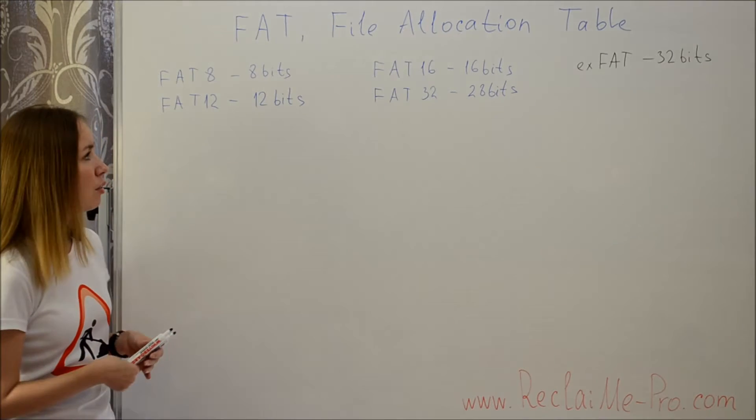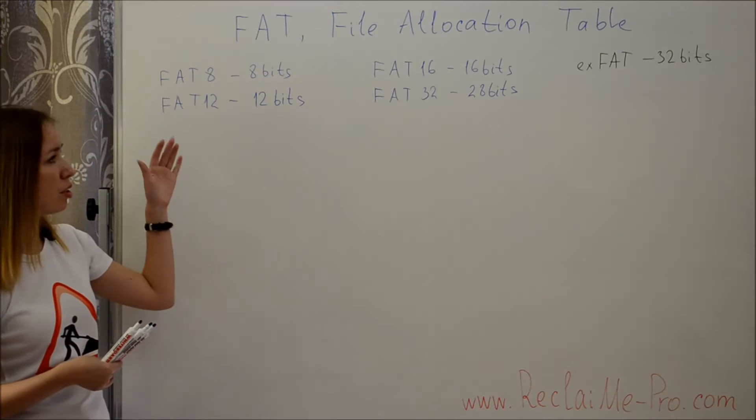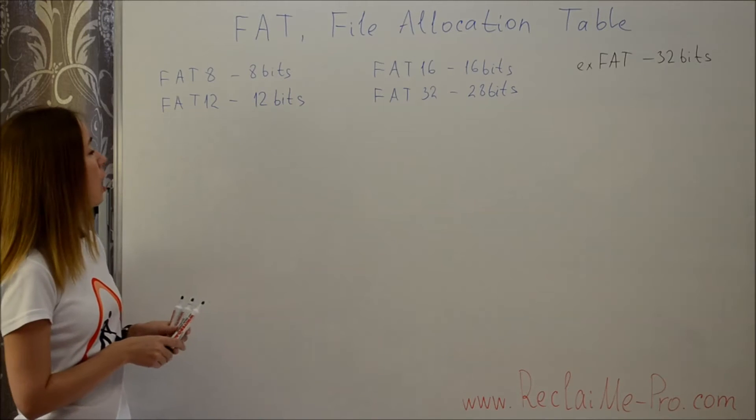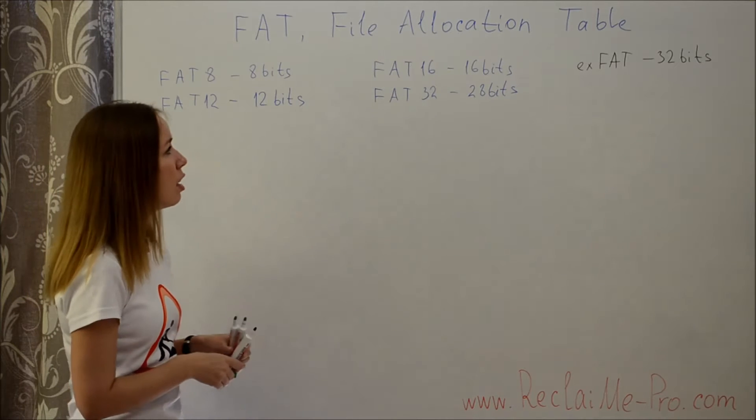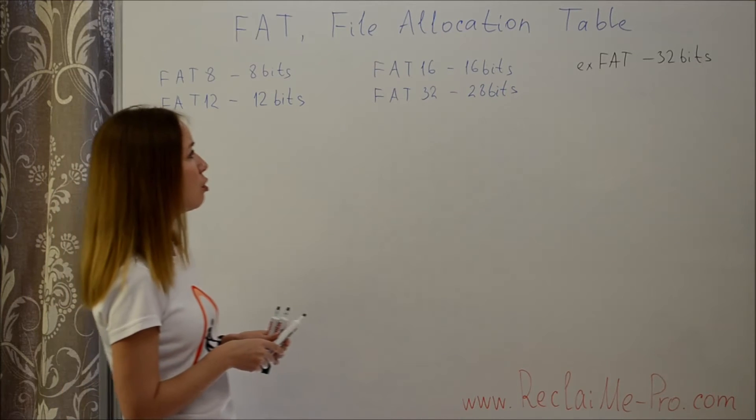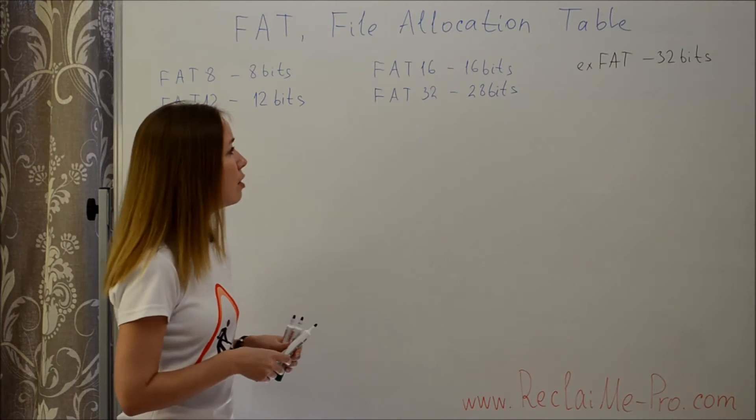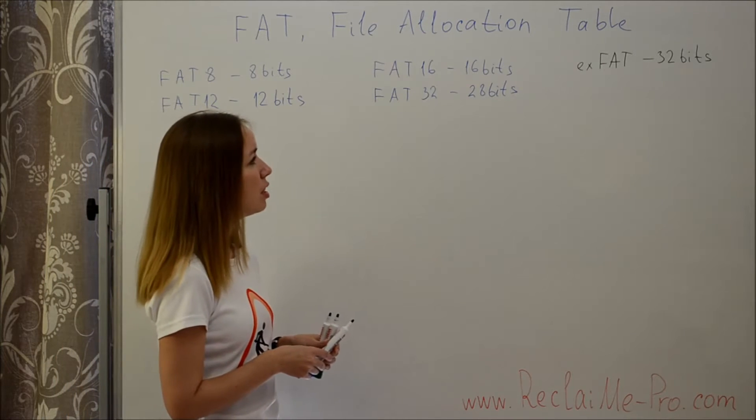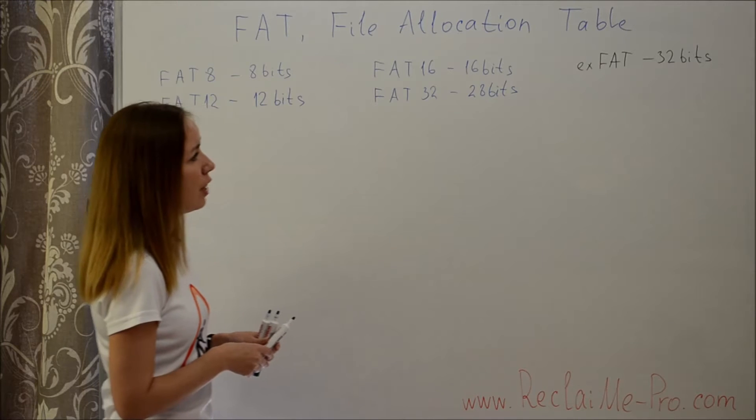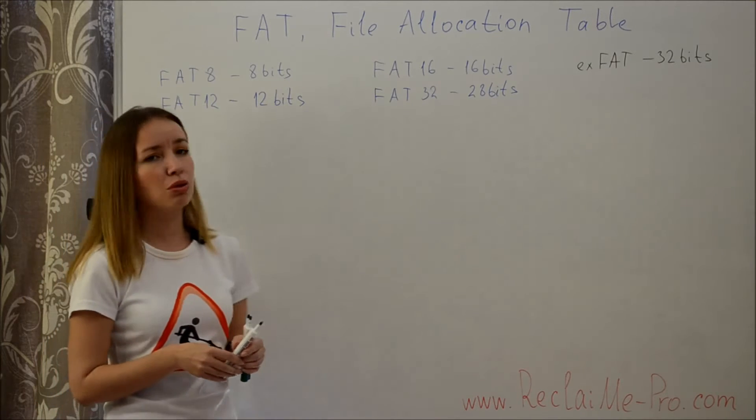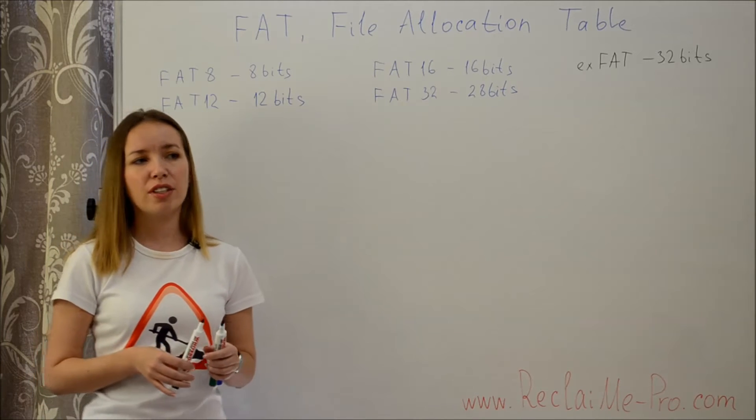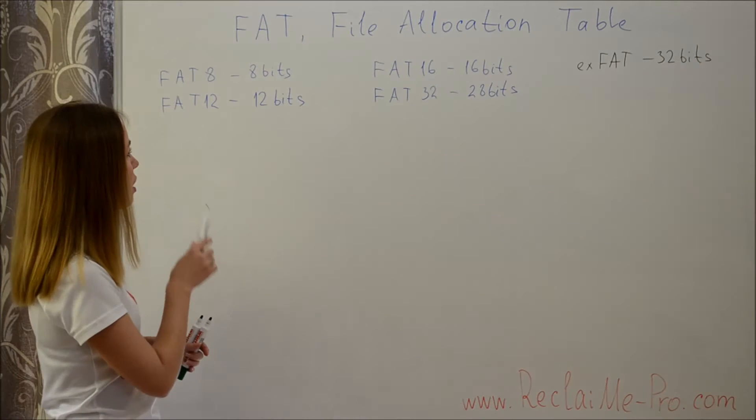The following FAT versions existed historically: FAT 8 used 8 bits, FAT 12 used 12 bits, FAT 16 used 16 bits, FAT 32 used 28 bits, and extended FAT uses 32 bits.